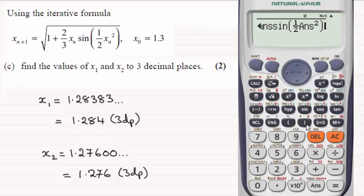When we press equals now, answer—remember, that was the first approximation 1.3—is going to work out what x₁ is. By pressing equals, we get x₁ = 1.28383..., which when rounded to three decimal places is 1.284.